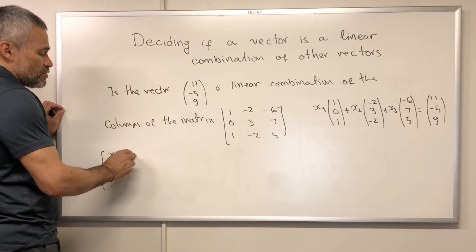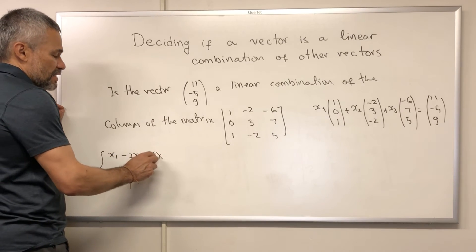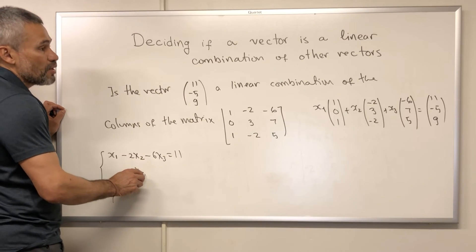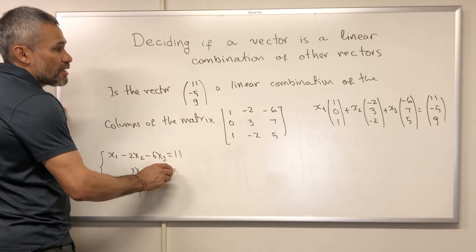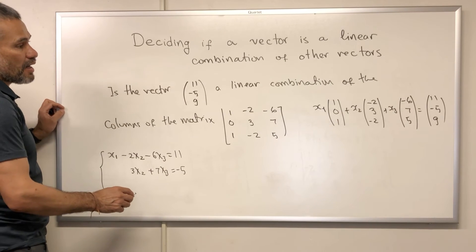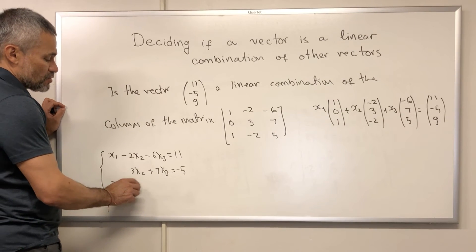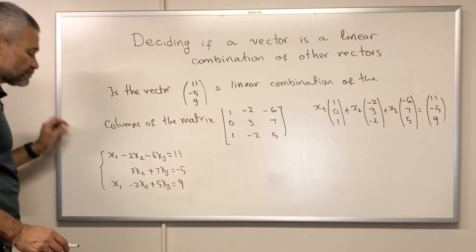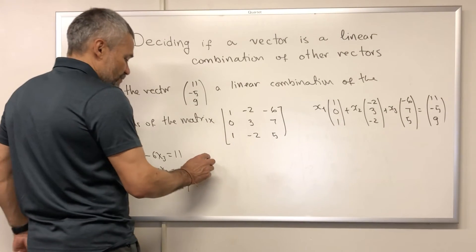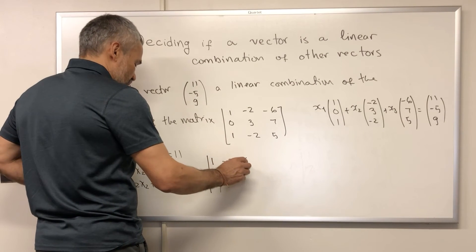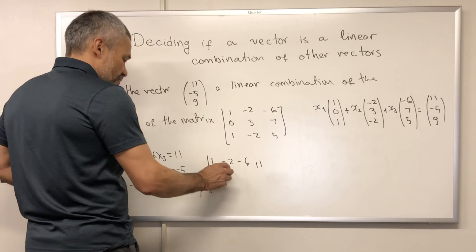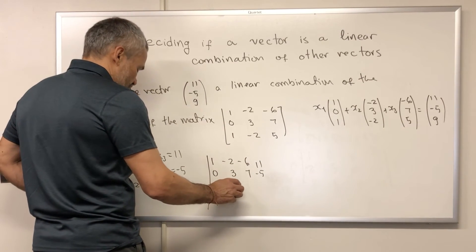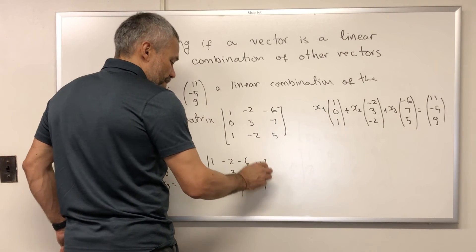The system is: x1 minus 2x2 minus 6x3 equals 11; 3x2 plus 7x3 equals negative 5; and x1 minus 2x2 plus 5x3 equals 9. The augmented matrix of this system is: 1, negative 2, negative 6, 11; 0, 3, 7, negative 5; 1, negative 2, 5, and 9.